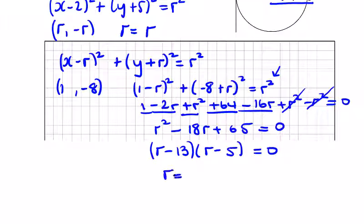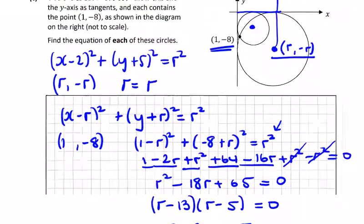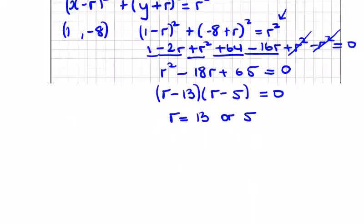So the radius is going to be 13 or 5. Meaning the two centers, and we ask for the equation of each of the circles, well the centers are going to be 13 minus 13, and let's say the other center is d, we're going to have 5 minus 5.